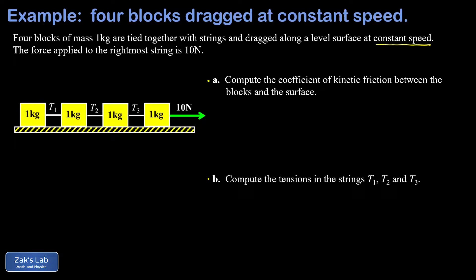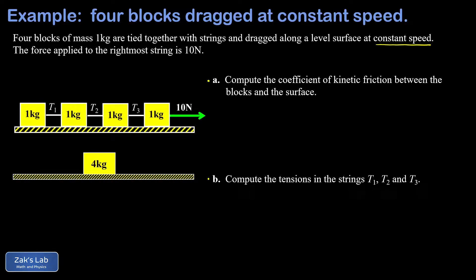For the shortcut method, the key is to realize you can treat the entire group of four one-kilogram masses as a single four-kilogram mass. This works because for the analysis of net force, all of those tensions are internal forces. What happens with T1, for example, is it pulls to the right on one block but pulls to the left on another block with exactly the same magnitude, so internal forces contribute zero to the vector sum.